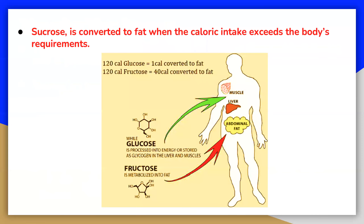Sucrose is converted to fat when the caloric intake exceeds the body's requirements. There are some clear differences in absorption, digestion, and metabolism between fructose and glucose. The liver is the major site of fructose metabolism. In the liver, fructose can be converted to glucose derivatives and stored as liver glycogen, which is good if you are physically active. However, the liver's ability to do this is limited. Indeed, with very high single serving doses of fructose, the fructose that arrives at the liver can easily be converted to fat, leading to excess creation of fats and short-circuiting of our energy balance and body fat-regulating systems.